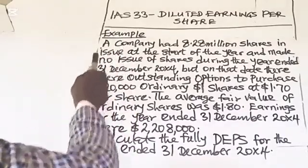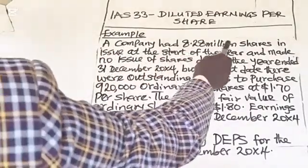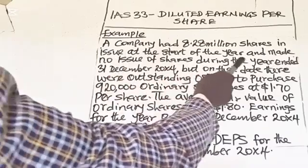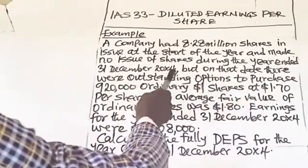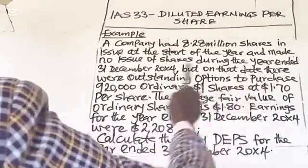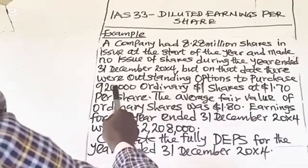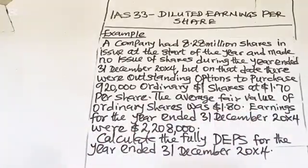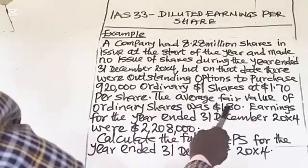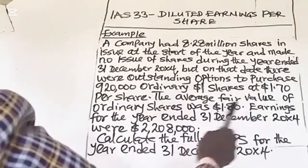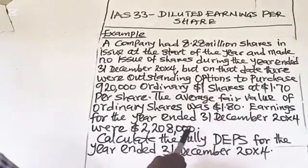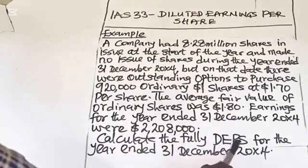Now let's work through an example. A company had 8,280,000 shares in issue at the start of the year, with no issue of shares during the year ended 31 December 20X4. But on that date there were outstanding options to purchase 920,000 ordinary $1 shares at $1.70 per share. The average fair value of ordinary shares was $1.80. Earnings for the year ended 31 December 20X4 were $2,208,000. Calculate the fully diluted earnings per share for the year ended 31 December 20X4.